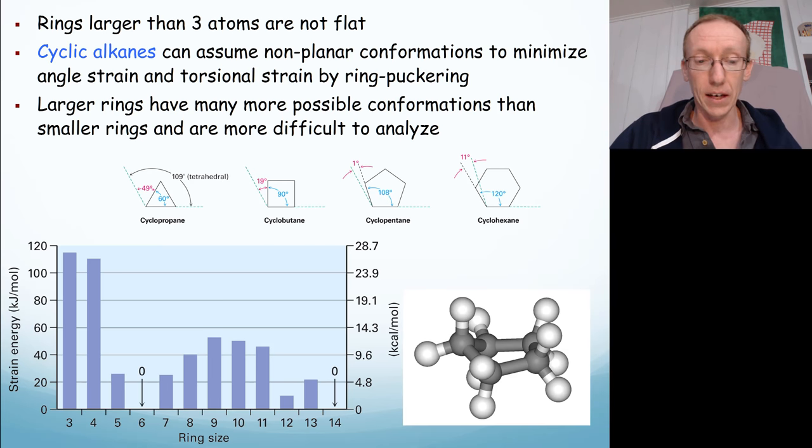The cyclic alkanes can assume non-planar conformations to maximize the bond angles, so they can minimize the angle strain that's involved in not getting that 109.5 degrees.